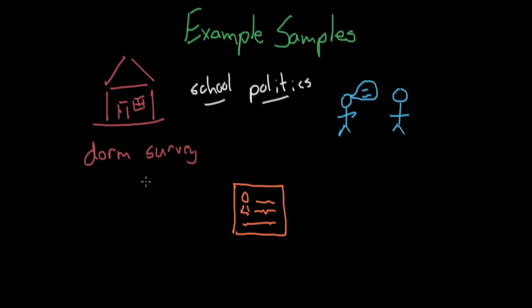The problem is that people of similar mindsets tend to live together. So if you survey a dorm, it's very likely to be either highly left-leaning because lots of left people live there, or highly right-leaning because lots of right-leaning people live there.